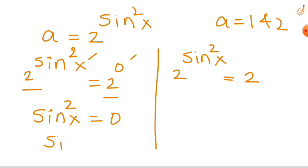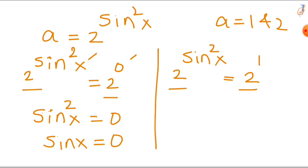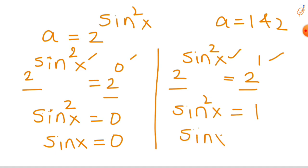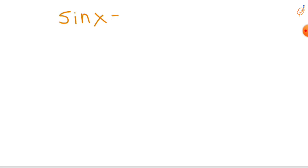Then sin x equals 0. For a equals 2: 2 raised to the power of sin²x equals 2, which can be written as 2 raised to the power of 1. When bases are the same, we equate the powers, giving sin²x equals 1. Then sin x equals plus or minus 1. So our sin x values are 0 and plus or minus 1.